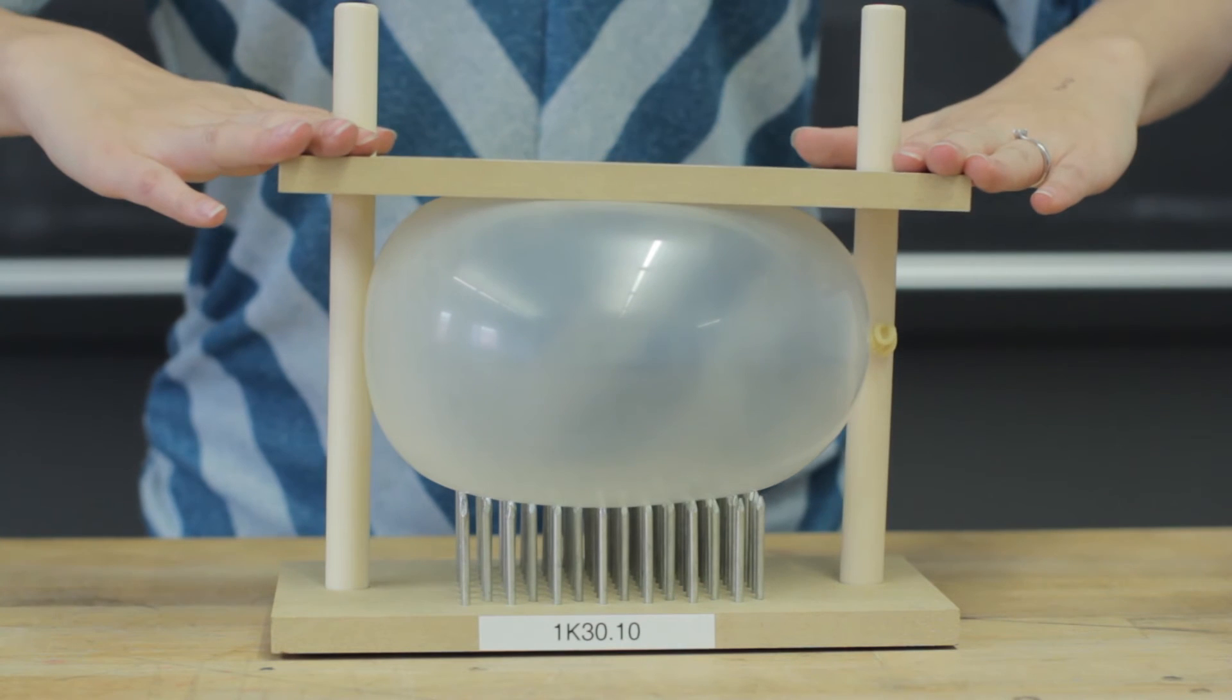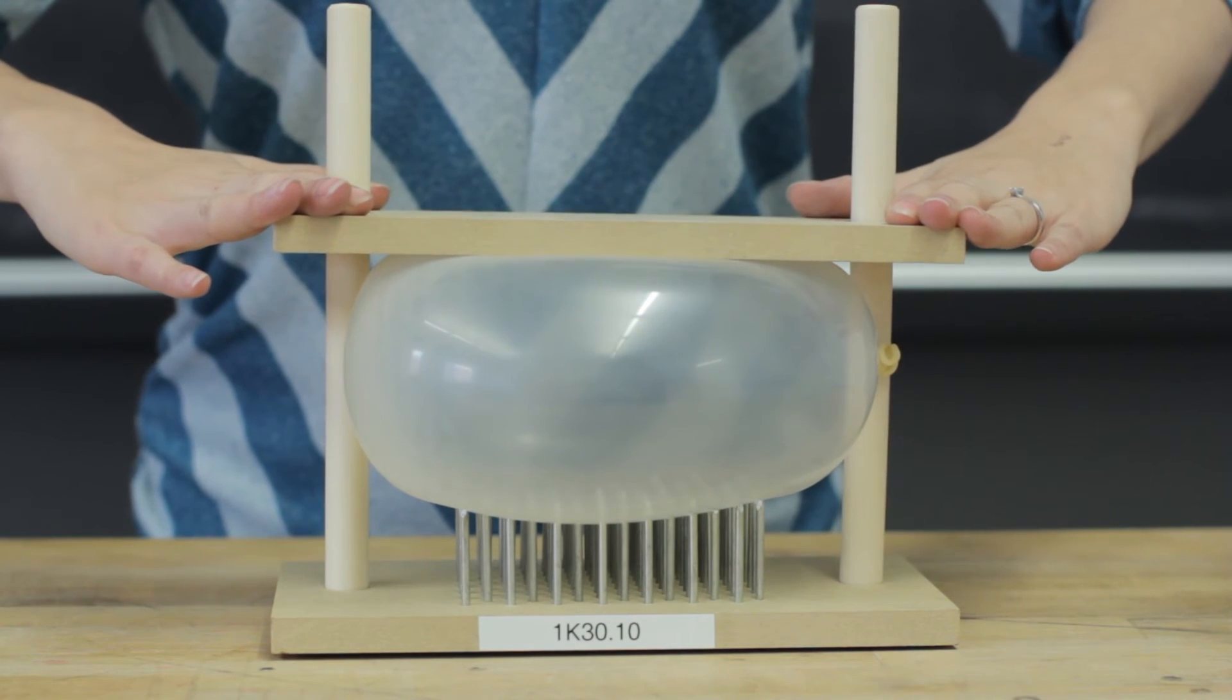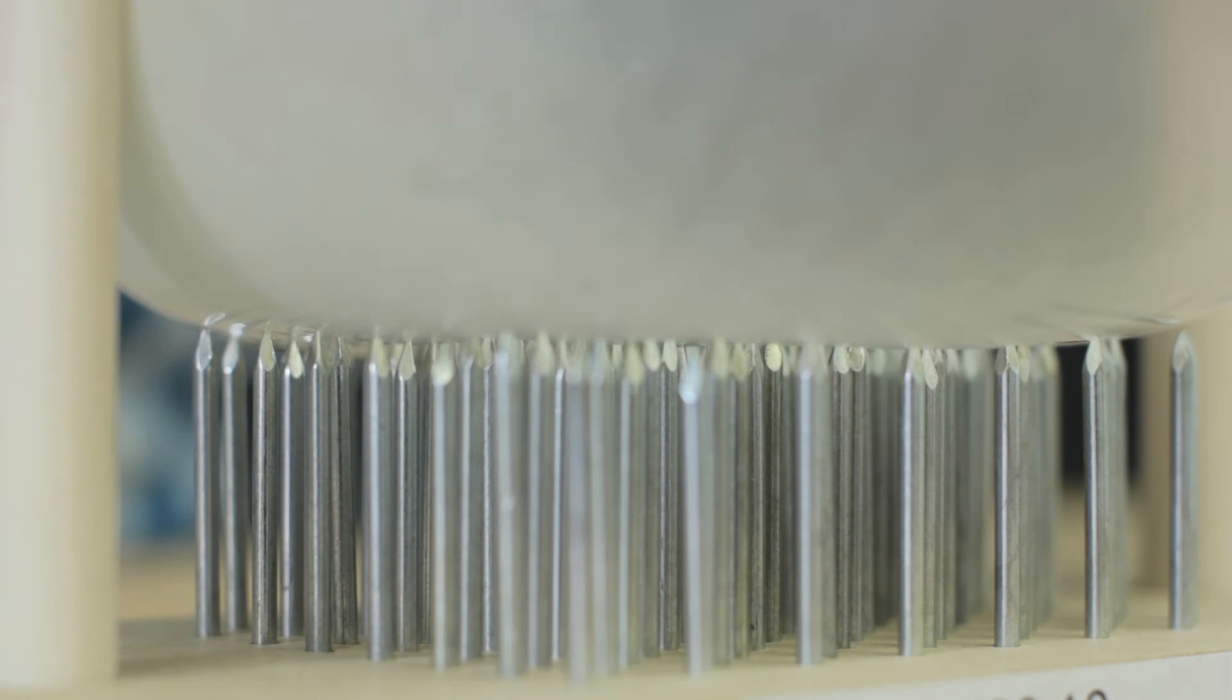If we repeat the demonstration with 60 nails, we can't break the balloon. The force applied is just as big, but it is spread over a larger area, so the pressure on the balloon is smaller.